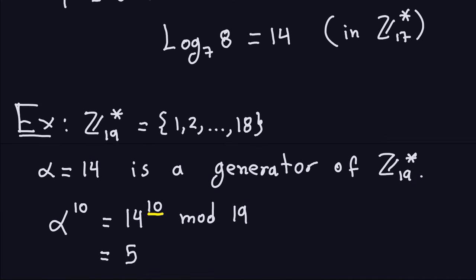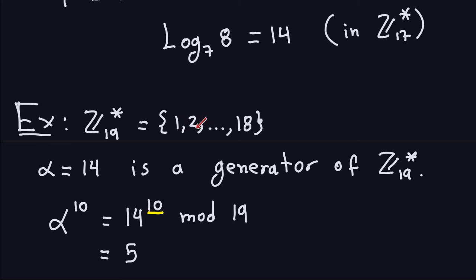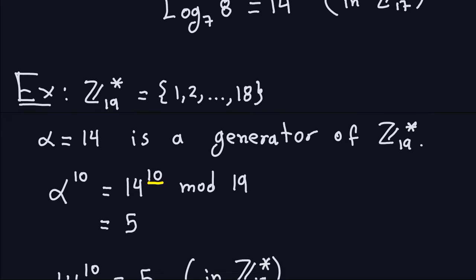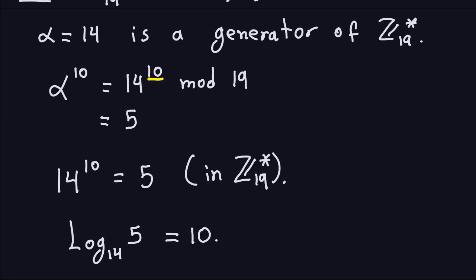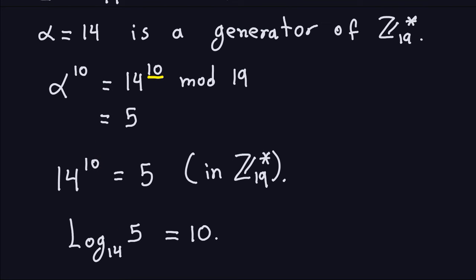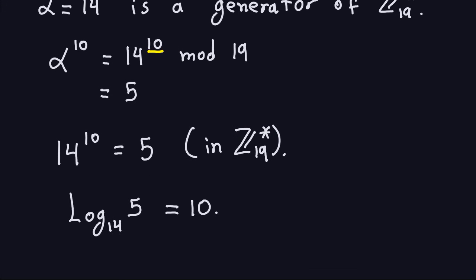Let's do another example. We have Z19-star, all numbers from 1 to 18, and 14 is a generator of Z19-star. As an example, I'll compute alpha to the 10, which is 14 to the 10 modulo 19. You take this number divided by 19 and get the remainder, which is 5. So 14 to the 10th power equals 5 in Z19. That means 10 is the discrete logarithm of base 14 of 5, and we write log base 14 of 5 equals 10, in this group.